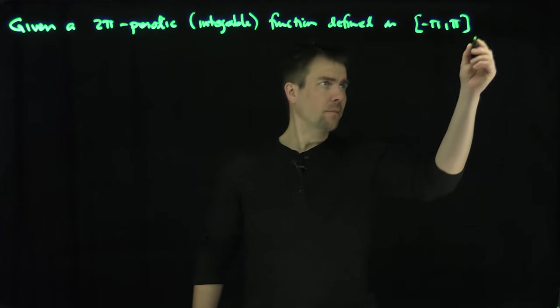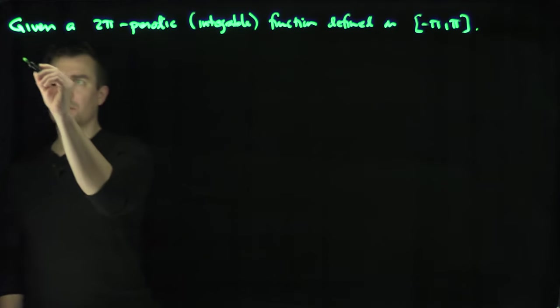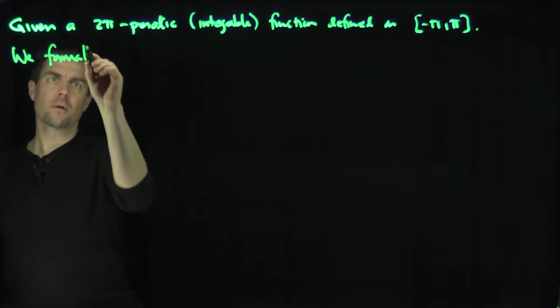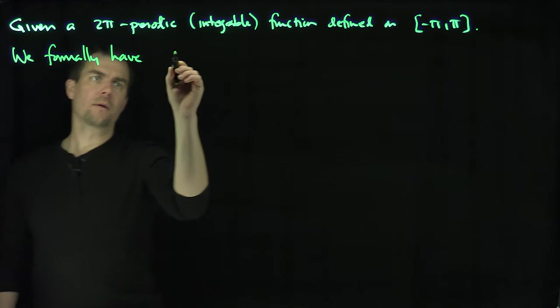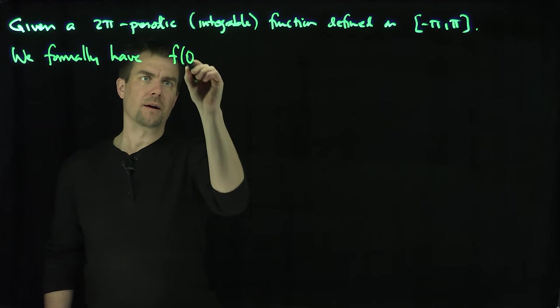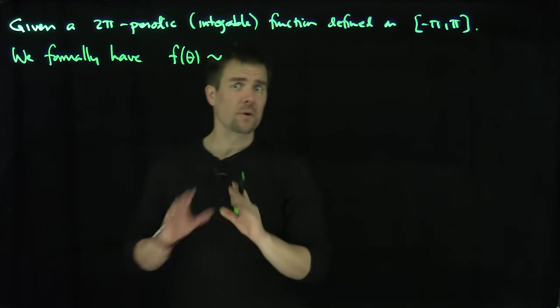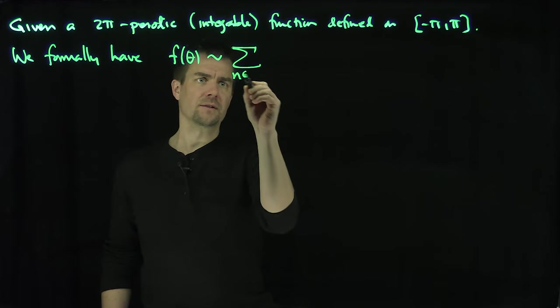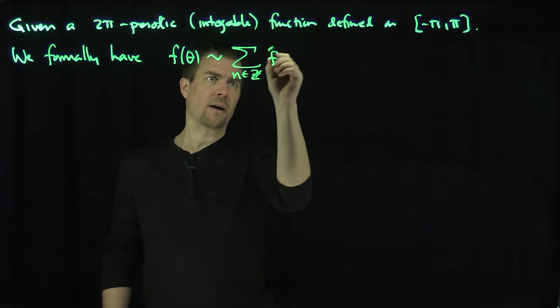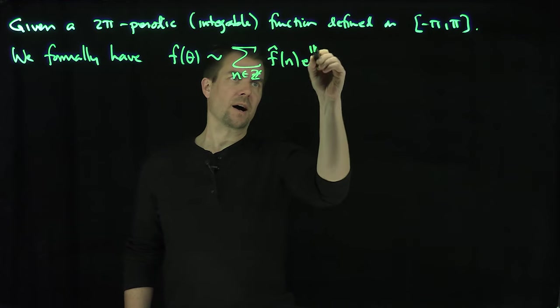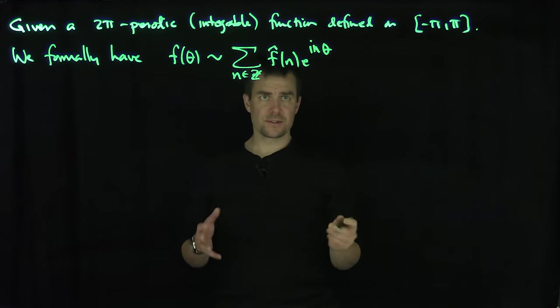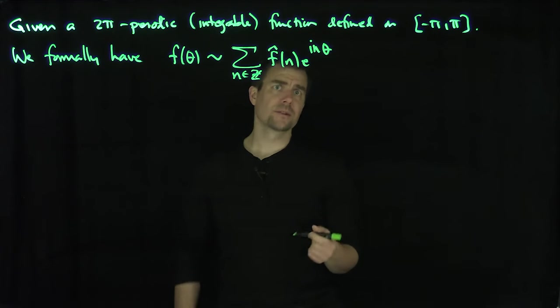Given a 2π periodic function, we formally have f(θ) is formally equal to the sum over n in ℤ of f̂(n)e^(inθ), because this collection e^(inθ) where n is in ℤ is an orthonormal set.